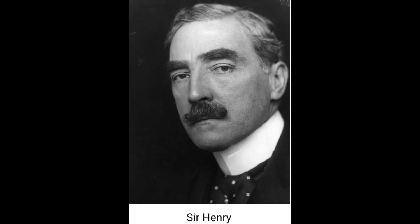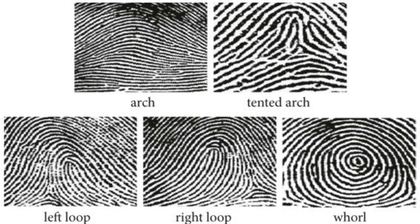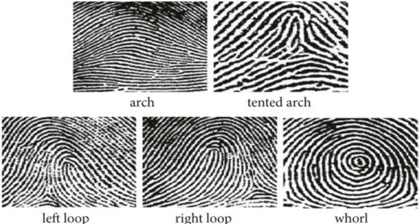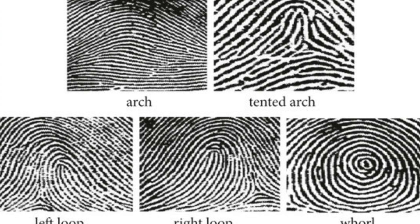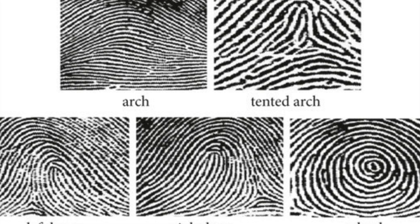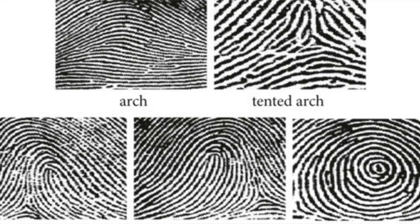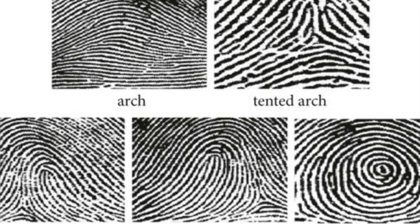Classification of fingerprints was first suggested by Sir Edward Henry in 1901, who recognized four main types: the arch, the loop, the whorl, and the composite. This unique individual pattern of fingerprints was used for identifying people.